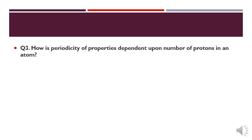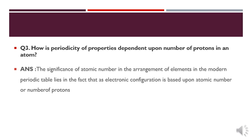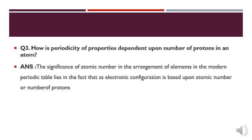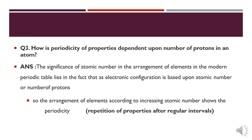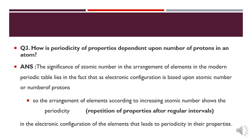How is periodicity of properties dependent upon the number of protons in an atom? The basis of electronic configuration is atomic number, and atomic number is equal to the number of protons. So the arrangement of elements according to increasing atomic number shows the periodicity of properties after regular intervals. Electronic configuration of elements leads to periodicity in their properties. That is why the periodicity of properties depends on the number of protons.